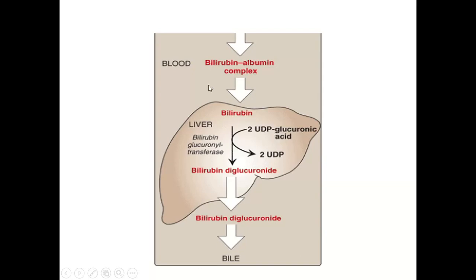So overall metabolism is divided into: first, production of bilirubin by catabolism of heme; second, uptake of bilirubin by hepatocytes for conjugation; and third, excretion of the conjugated bilirubin in the bile. The cause of jaundice lies either in increased production, defect in conjugation, or defect in excretion. Jaundice or hyperbilirubinemia is classified into three groups: pre-hepatic, hepatic, or post-hepatic.